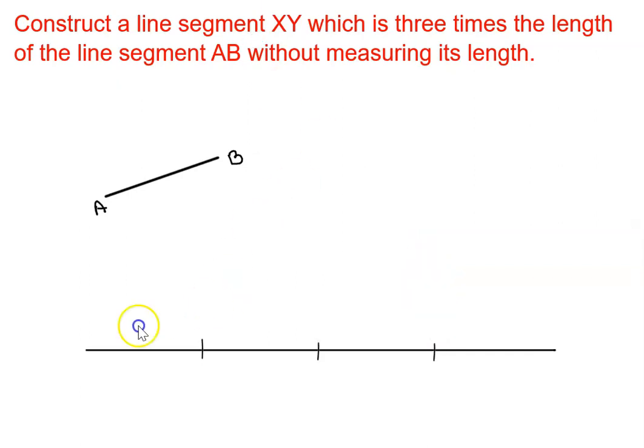So now I have this length AB, then another length AB, and another length AB. I've done this three times. So this particular line segment, starting from this endpoint X to Y, is three times the length of AB.